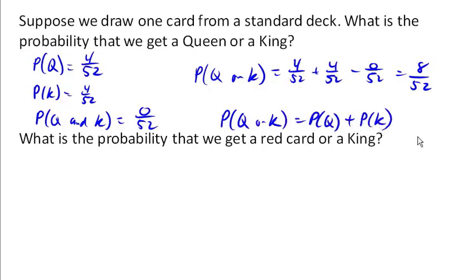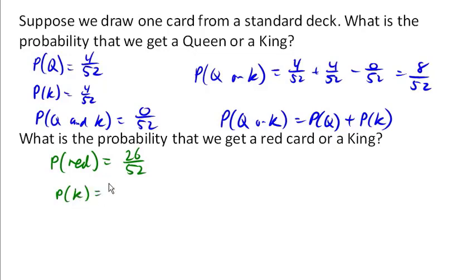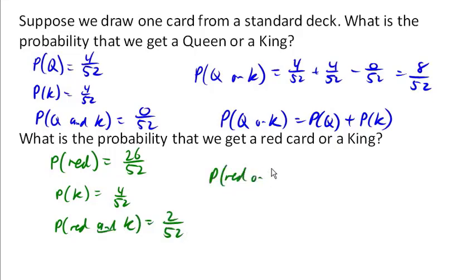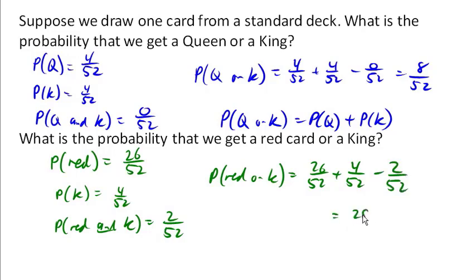In the case of mutually exclusive events, the probability of A or B is simply the probability of A plus the probability of B. That's not always the case. What's the probability we get a red card or a king? The probability of a red card is 26 out of 52. The probability of a king is 4 out of 52. There are two red kings, so we have overlap. For red or king, we add the two individual probabilities and subtract the overlap, giving us 28 out of 52.